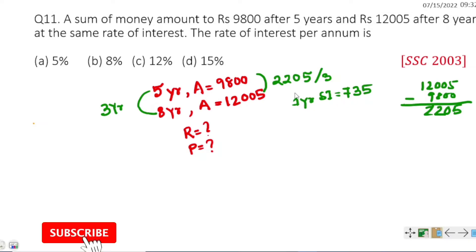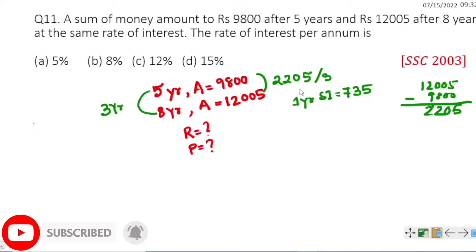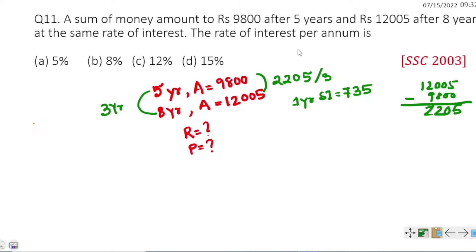The simple interest over 5 years: 735 multiplied by 5 equals 3675. So the simple interest for 5 years is 3675.